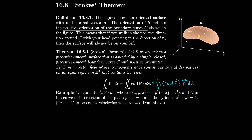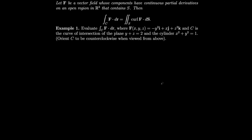Unfortunately we are not going to prove Stokes' Theorem because it's even harder to prove than Green's Theorem. Instead, let's use Stokes' Theorem to evaluate a line integral. We have F(x, y, z) = (2 − y²)i + xj + z²k, and C is the curve of intersection of the plane y + z = 2 and the cylinder x² + y² = 1.